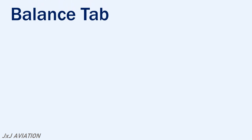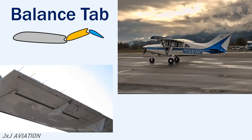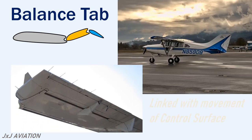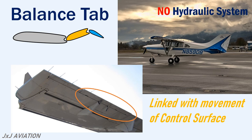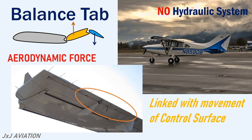A balance tab looks similar to a plain trim tab, but the balance tab's movement is linked with the movement of the control surface. This tab is useful on aircraft which do not have a hydraulic system which assists in the deflection of a control surface. When a control surface is deflected up, the tab will be deflected in the opposite direction, or downward. The tab provides an additional aerodynamic force to hold the control surface in its required position and assists in the control surface deflection.